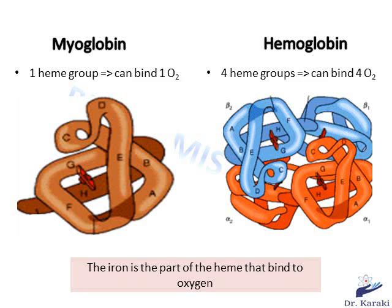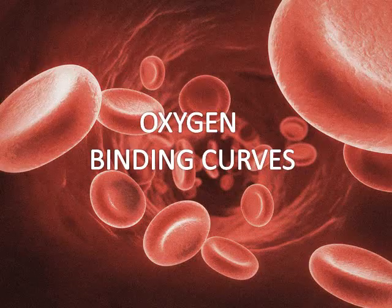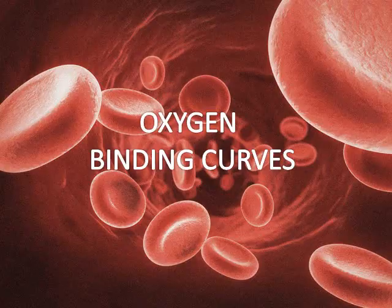Since myoglobin is made of one subunit, it contains one heme group and can only bind one oxygen molecule. Note that the iron is the part of the heme that binds oxygen. Hemoglobin is made of four subunits and thus contains four heme groups and can bind four oxygen molecules.